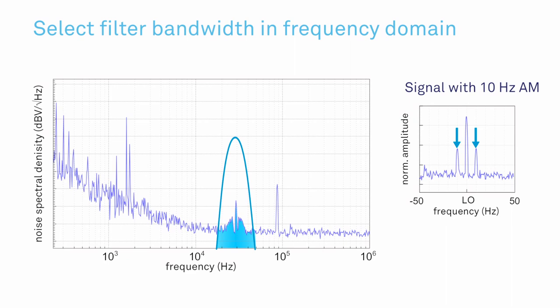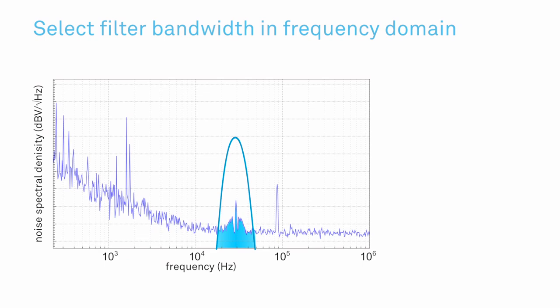For example, if you want to observe a 10 Hz amplitude modulation of your signal, the filter bandwidth needs to be at least that large.